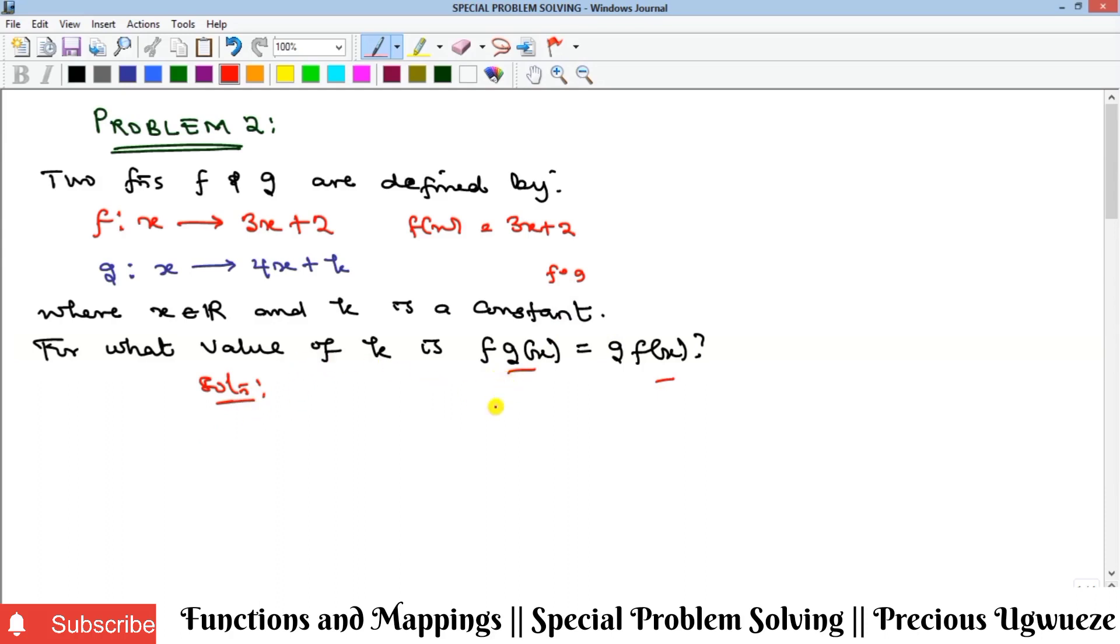F(x) is 3x + 2, so that means f(g) will be putting g as our x. That equals 3 times g(x), and our g(x) is 4x + k, plus 2. This is going to give us 12x + 3k + 2. So this is our f composition g.